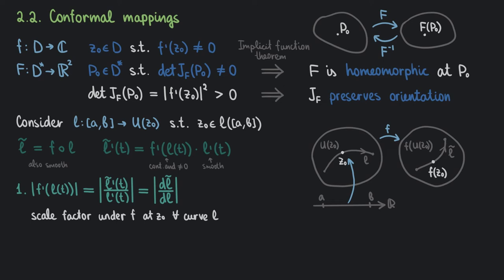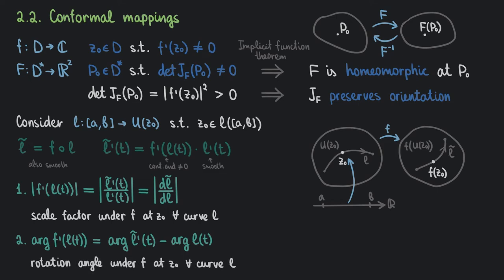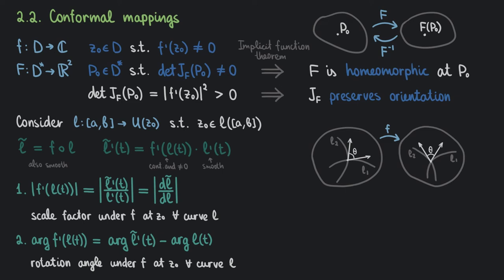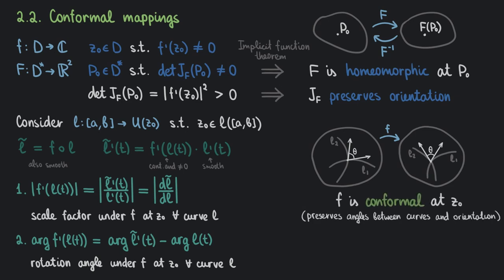As to the argument of F′(z), it equals the angle by which L is rotated under F at Z₀. Since F is holomorphic, this angle is the same no matter which curve L we choose. So all curves through Z₀ are rotated by the same angle. Therefore, if we have two curves L₁ and L₂ intersecting at Z₀, after the transformation F will preserve the angle between them as well as the orientation of the complex plane. Such transformations are called conformal. We've shown that in a region with no critical points, a holomorphic function F is also conformal.